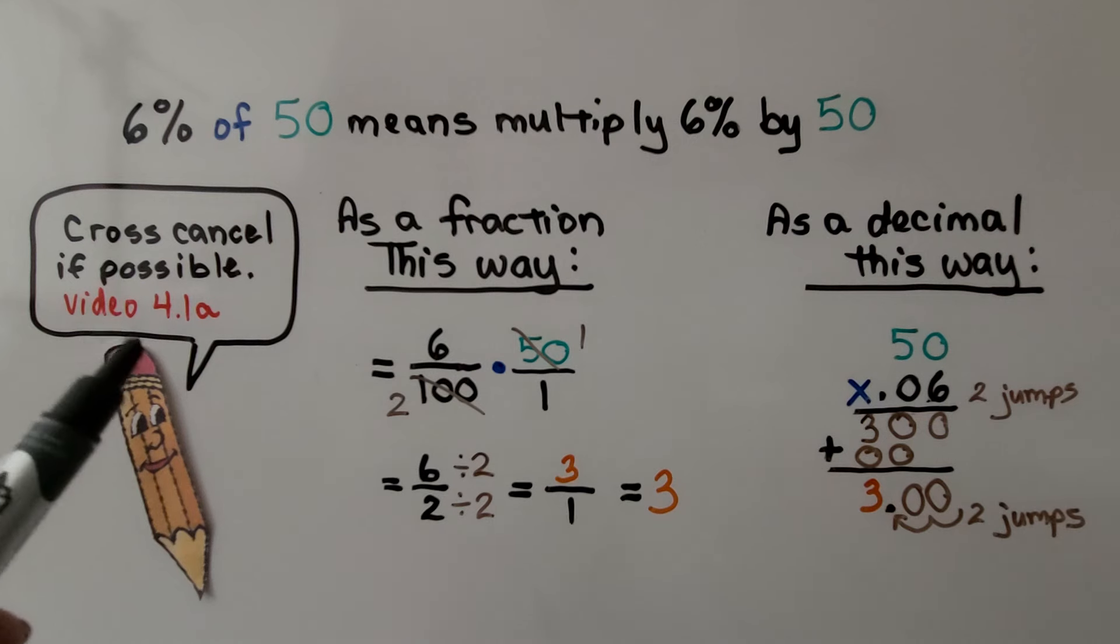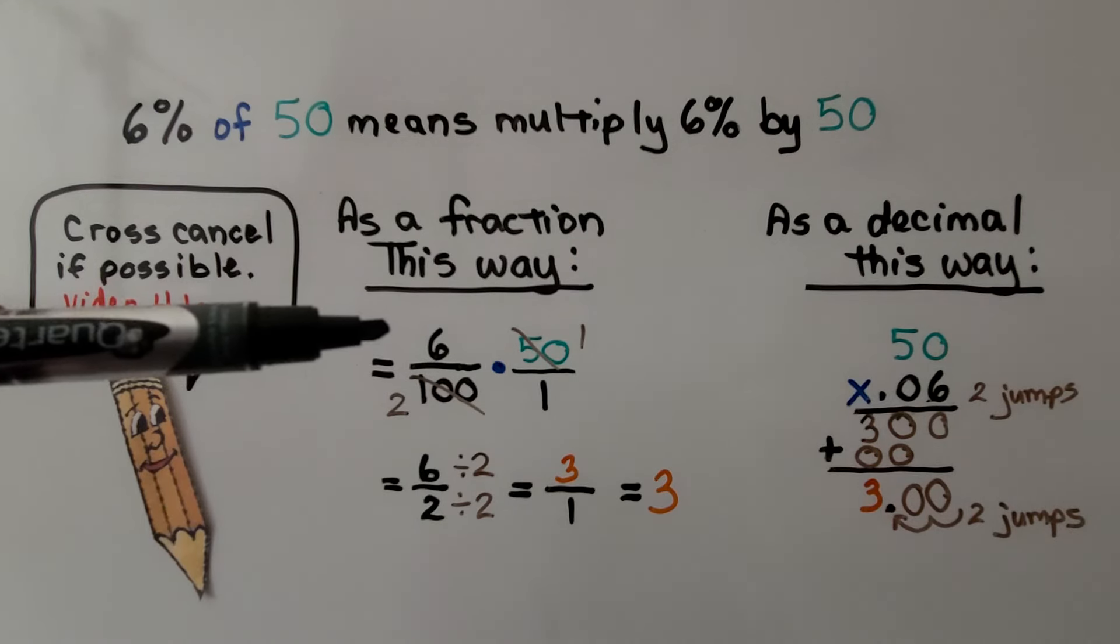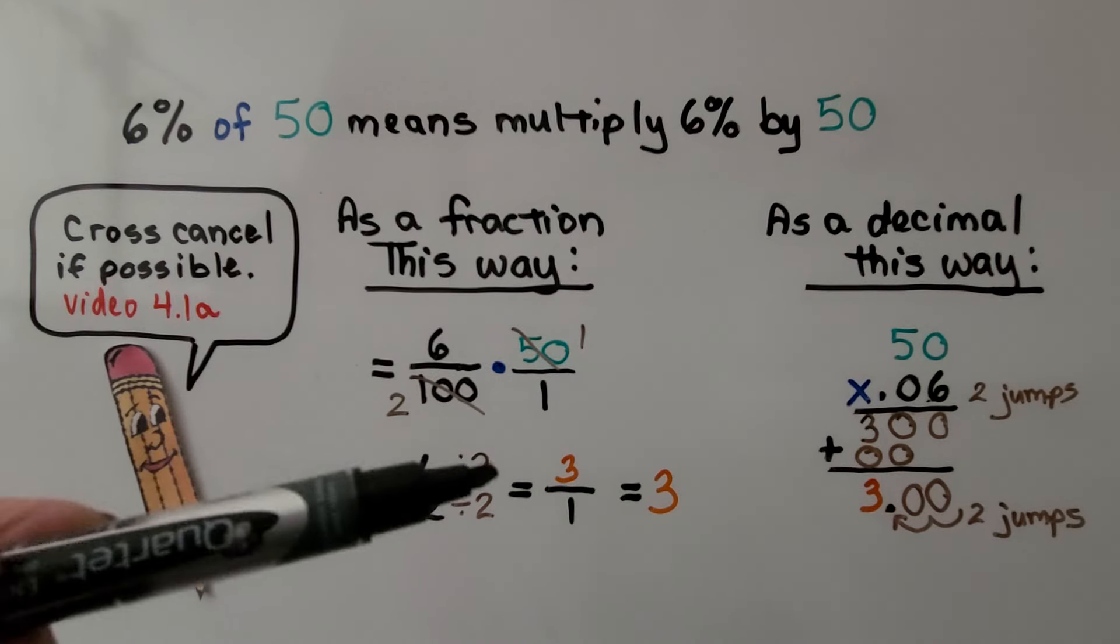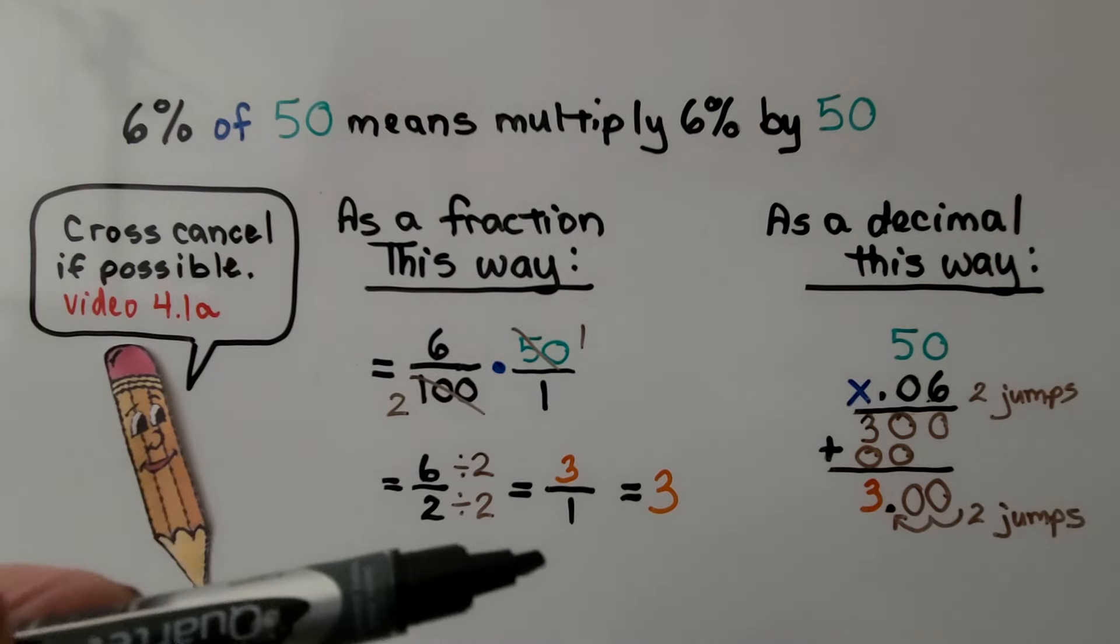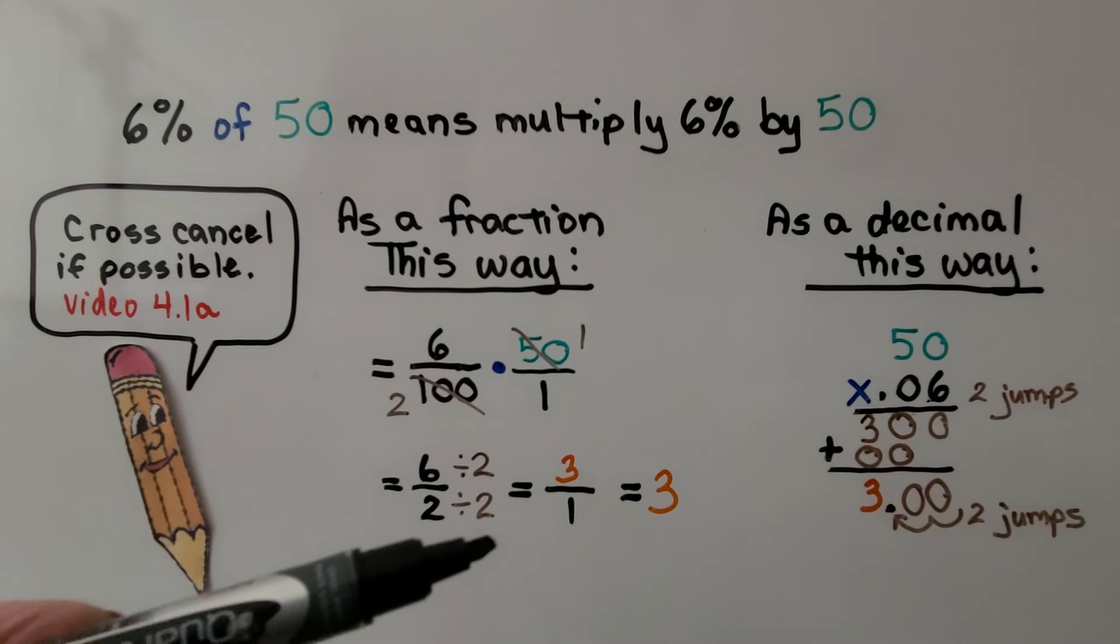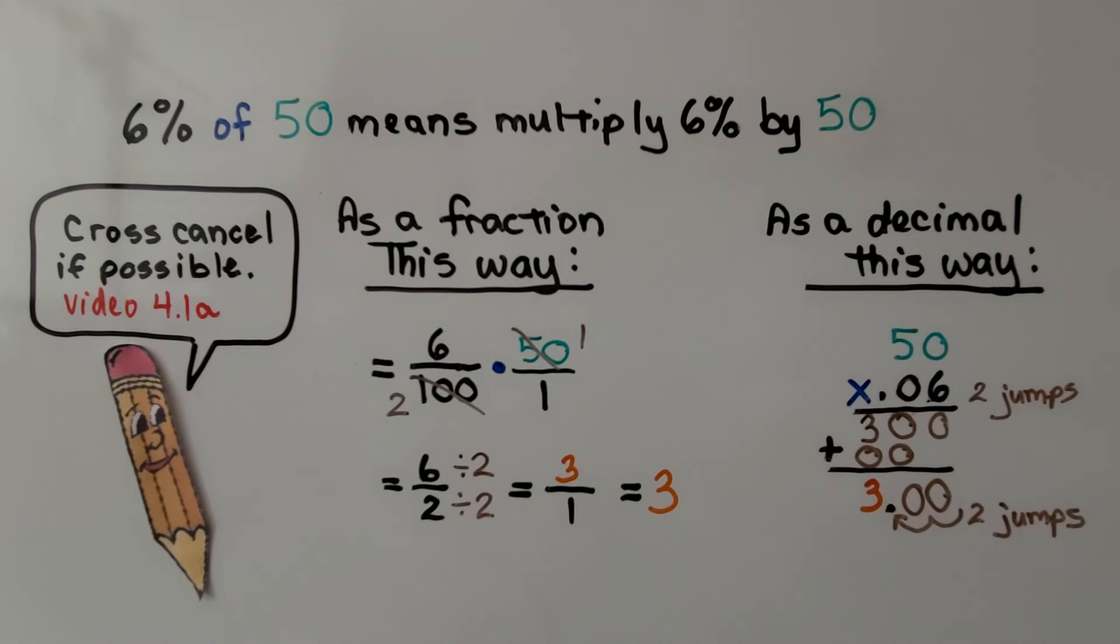Now, there's a link in this description to video 4.1a about cross-canceling. If you use cross-canceling, you're going to go much faster. Otherwise, you would have had 300 over 100, and yes, that's easy numbers. We could have simplified that, but sometimes it'll take you a while to simplify it. If you do the cross-canceling, you're simplifying it as you're doing the problem. It's quicker.